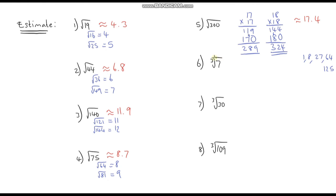Cube root of 7: 7 is between the cube numbers 1 and 8, so it's between 1 and 2. It's slightly closer to 2, so let's say approximately 1.8. Next: cube root of 30. 3 cubed is 27 and 4 cubed is 64, so it's going to be between 3 and 4, and it's closer to 3. Let's go with 3.1 for this one.